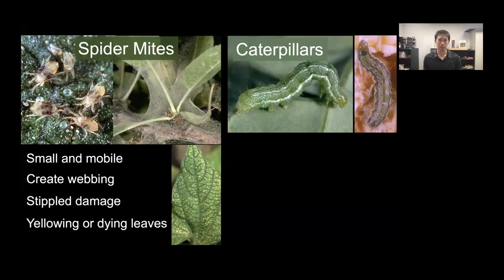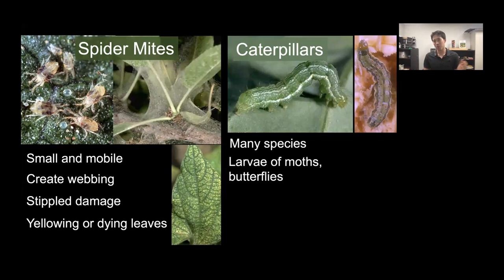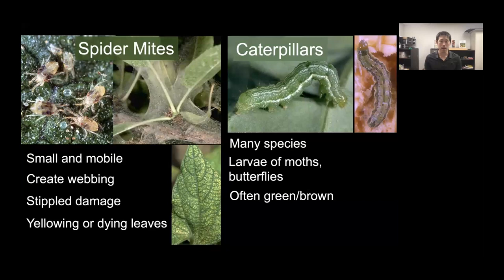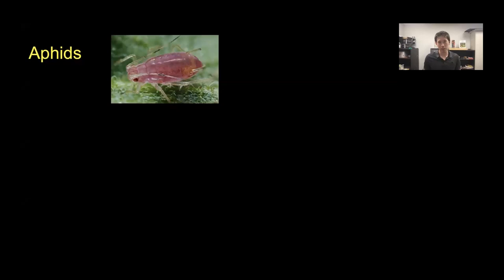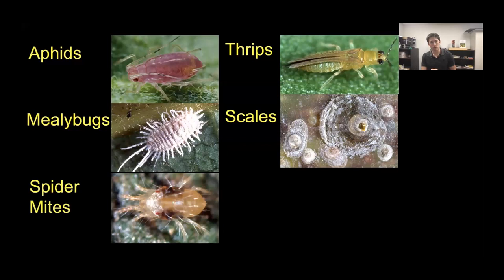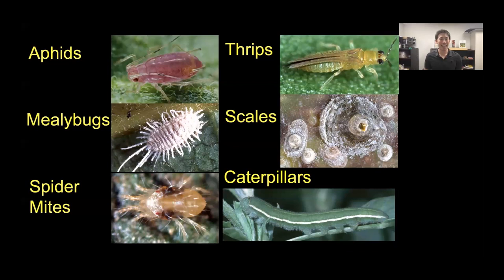Caterpillars—the larvae of moths and butterflies—are familiar pests. The most problematic tend to be camouflaged, though they come in many colors with various spikes and tufts. Signs of caterpillars include chewed sections of leaves, flowers, or vegetables, and the presence of frass—their feces—which looks like little black dots and crumbly specks. To summarize the bad bugs: aphids, thrips, mealybugs, scales, spider mites, and caterpillars are the classic pests you're likely to encounter.